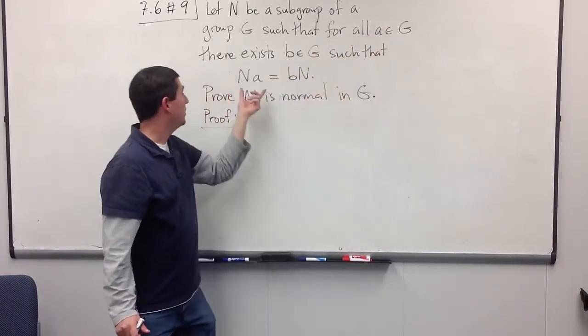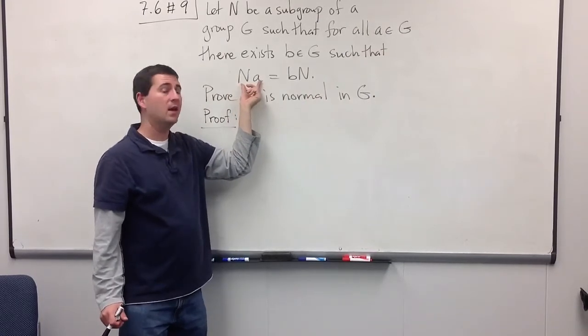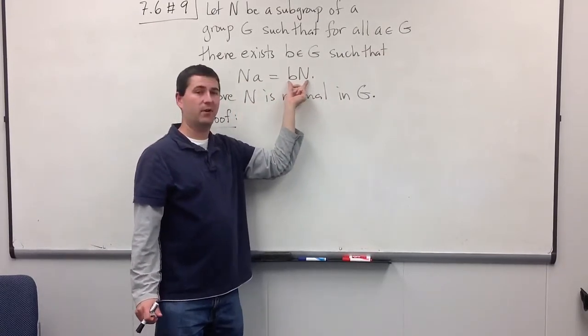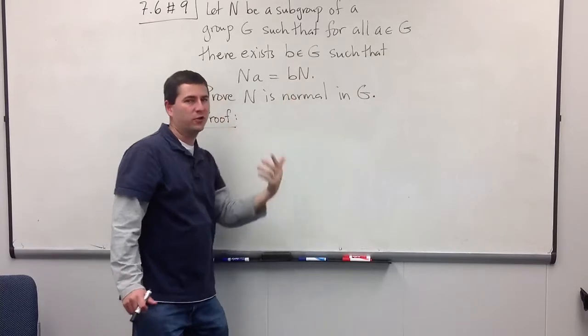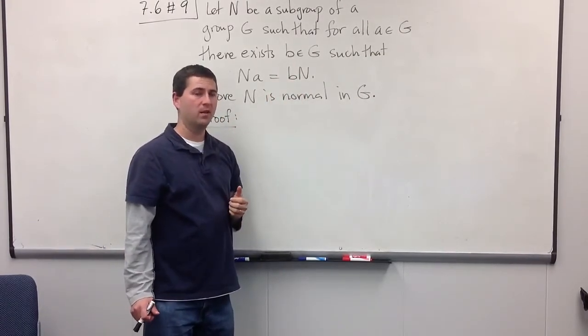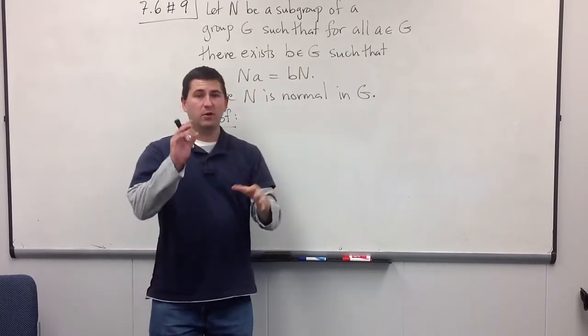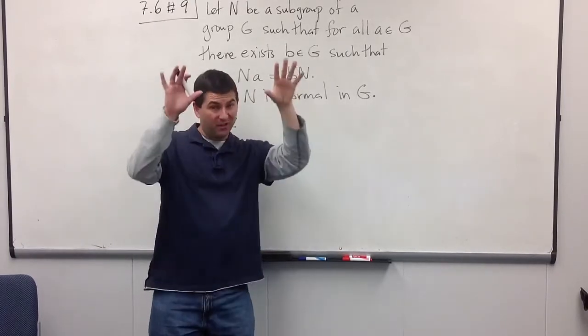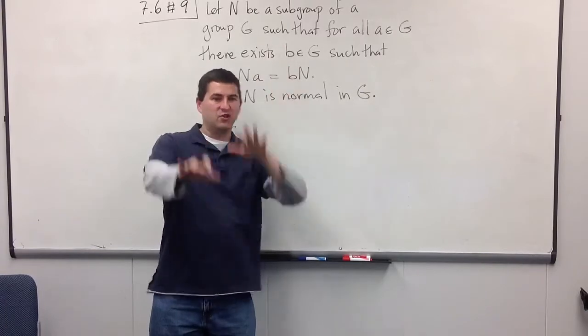We know that for any A in G, if we look at the right coset NA, then it's going to equal a left coset, only we don't know for sure that it's AN. That's just what we would want for it to be a normal subgroup. So what this is saying is that if you look at all the left and right cosets, they're the same sets, but maybe they get jumbled up a little bit.